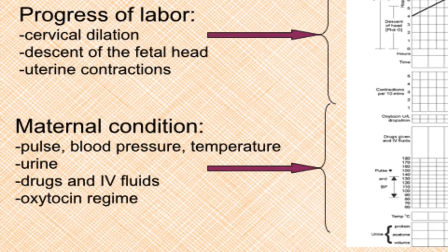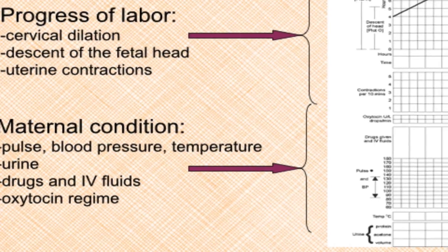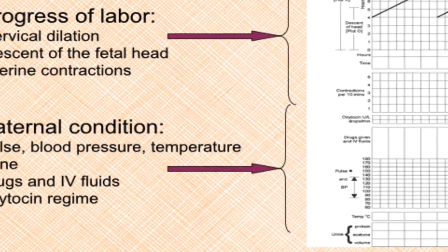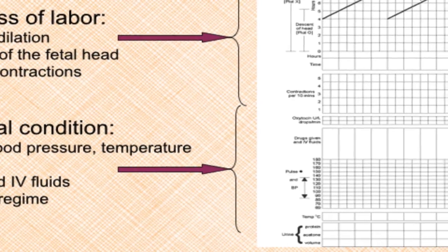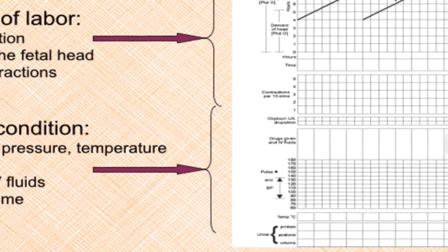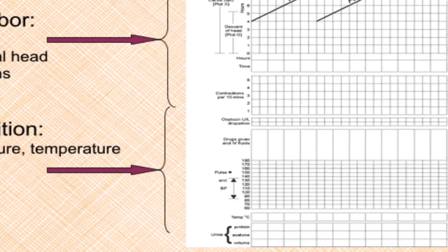The third component is maternal condition which is shown at the bottom. It comprises pulse, blood pressure, temperature, urine, that is its volume, presence or absence of albumin or acetone. Any drugs given or IV fluids are recorded here and oxytocin drip rate is also recorded.